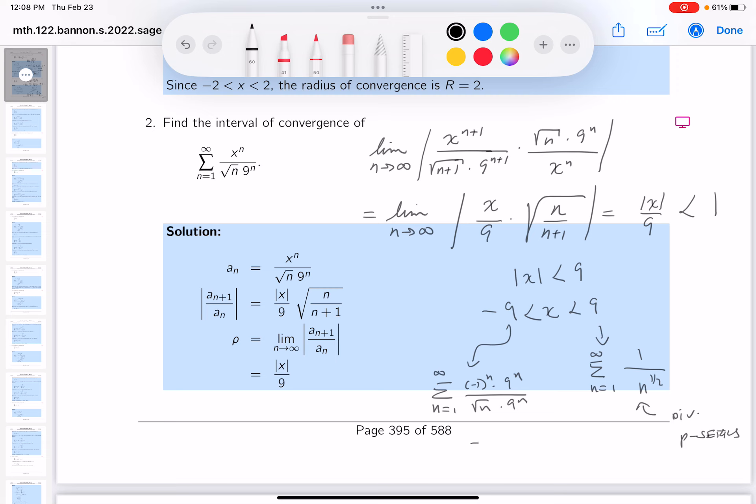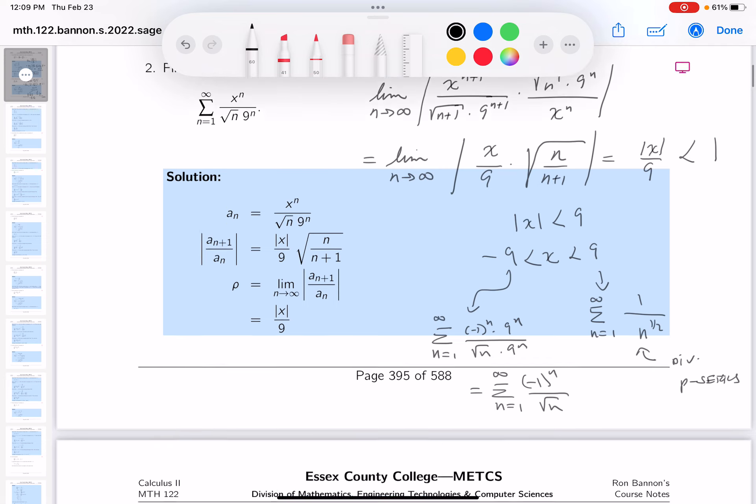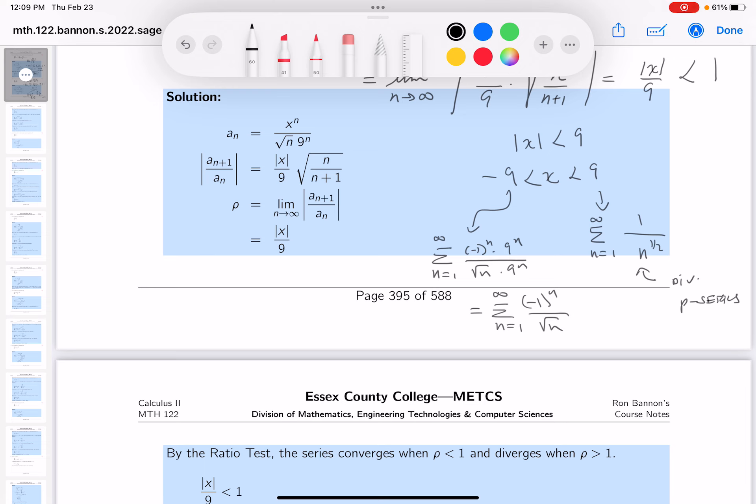Well, it cancels off. And I get something fairly obvious. You get minus 1 to the n over root n. And what do I know about this? It's a convergent series. It's an alternating series. This is an alternating series test.